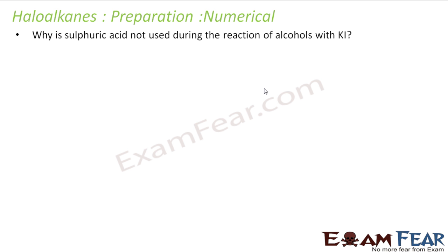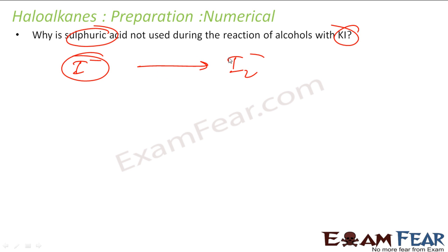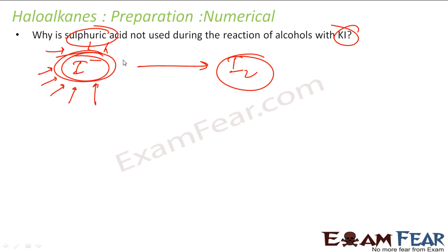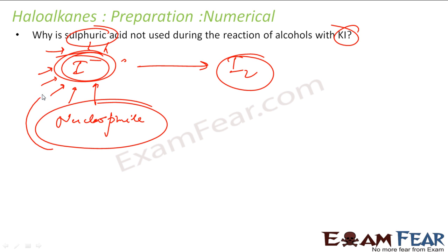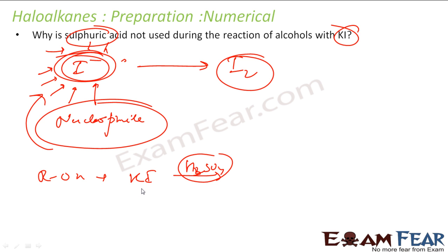Let us take some examples. The question is: why is sulphuric acid not used in the reaction of alcohol with KI? KI provides I minus, but sulphuric acid is a very strong acid — it will oxidize I minus and convert it to I2. So I minus, which is my nucleophile, is exhausted. If I use H2SO4 with ROH and KI, the H2SO4 will destroy the I minus. So instead of H2SO4, I will use H3PO4, which is a slightly weaker acid and will not consume the I minus nucleophile.